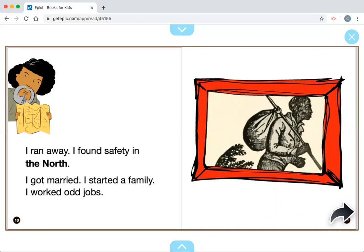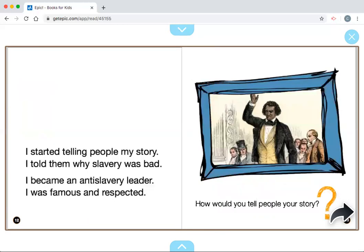I ran away. I found safety in the North. I got married. I started a family. I worked odd jobs. I started telling people my story. I told them why slavery was bad. I became an anti-slavery leader. I was famous and respected. So definitely explaining here that he was against slavery and he started telling people about his own life, of how he was born into slavery and how he didn't want that for anybody.